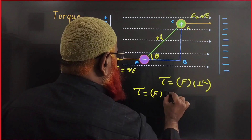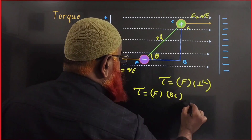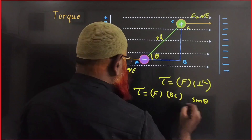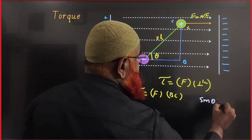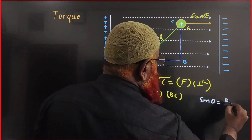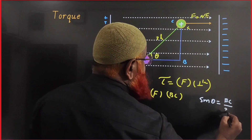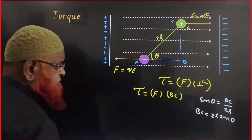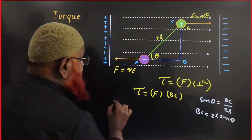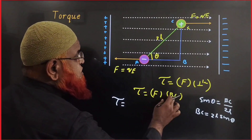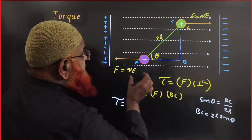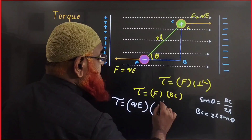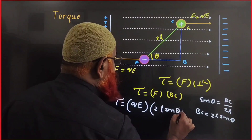The perpendicular distance is taken as BC. Now, considering sine theta: sine theta equals the opposite side BC over the hypotenuse 2L. Therefore BC is nothing but 2L sine theta. So the torque τ equals F into BC, where F is QE and BC is 2L sine theta.